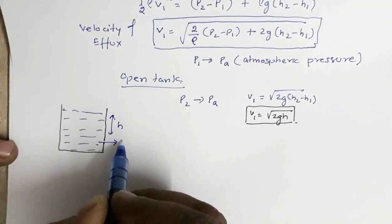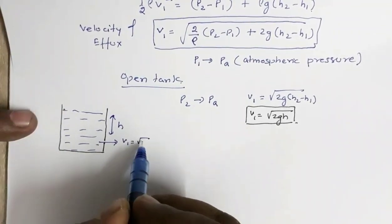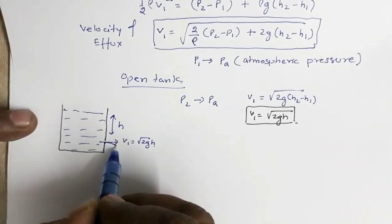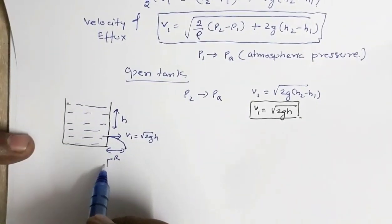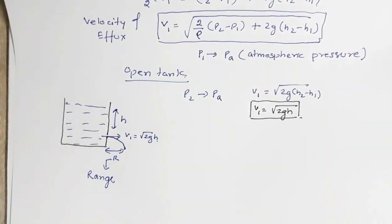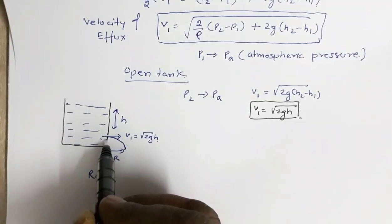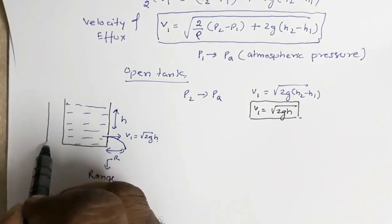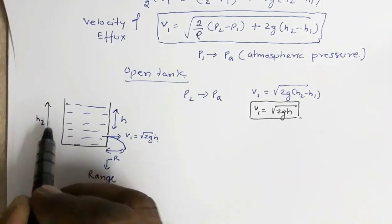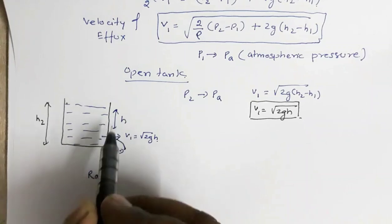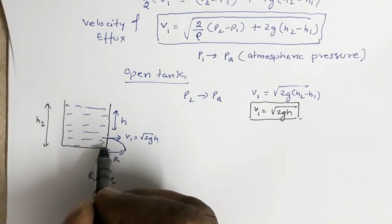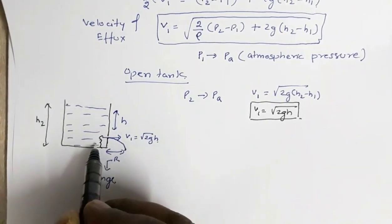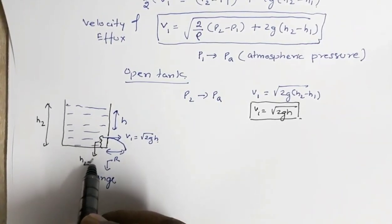From this opening, water is coming out and it will fall at some point — that distance is the range R. The total height of the tank is h2, the water level above the opening is h, so the height through which this water falls vertically is h2 minus h.